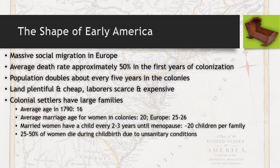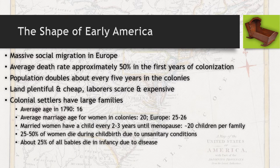Childbirth was an extremely risky event — 25 to 50% of women ended up dying during childbirth due to unsanitary conditions. Most people did not bathe regularly; Queen Elizabeth reportedly bathed once a year and thought that was too much. Common individuals probably bathed even less. This bred disease and infection. About 25% of all babies ended up dying in infancy primarily due to disease, as there were no sanitary conditions and children were not washed regularly. Many practices would border on neglect by modern standards.